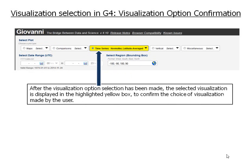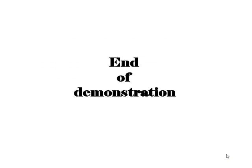After the visualization option selection has been made, the selected visualization is displayed in the highlighted yellow box to confirm the choice of visualization made by the user. This concludes the demonstration.